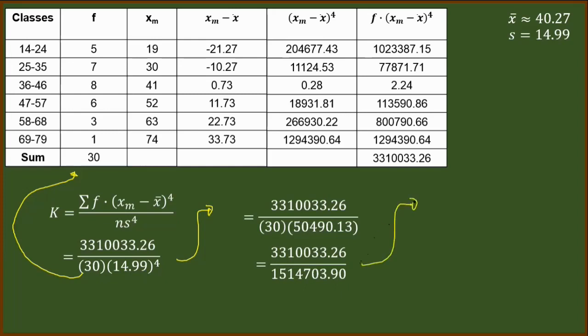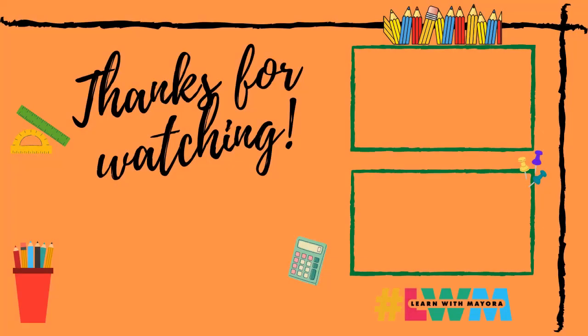And finally, dividing these two numbers and interpreting the result, we have 2.19 and that is, obviously, less than 3. So, meaning our data set is platykurtic. That's it on how we get the kurtosis and interpret its value for group data. Thank you for watching and see you on the next video. Bye.